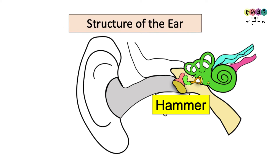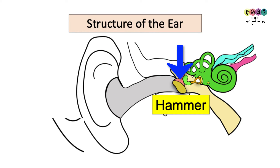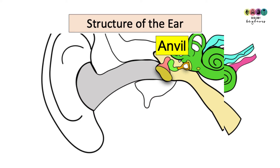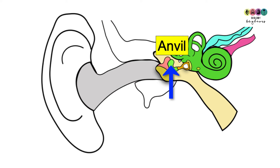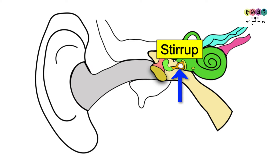The first of the ossicles is the hammer and it's attached to the eardrum, so when those sound waves hit the eardrum and it vibrates, it in turn causes the hammer to move. Attached to the hammer is the anvil, which in turn is attached to the last ossicle, the stirrup — which actually looks like a stirrup that you'd put your foot into if you were to get up on a horse.